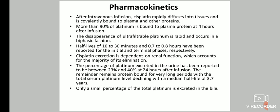Cisplatin excretion is dependent on renal function, which accounts for the majority of its elimination. The percentage of platinum excreted in the urine has been reported to be between 23% and 40% at 24 hours after infusion. The remainder remains protein-bound for very long periods, with total serum platinum level declining with a median half-life of 3.7 years. Only a small percentage is excreted in the bile.